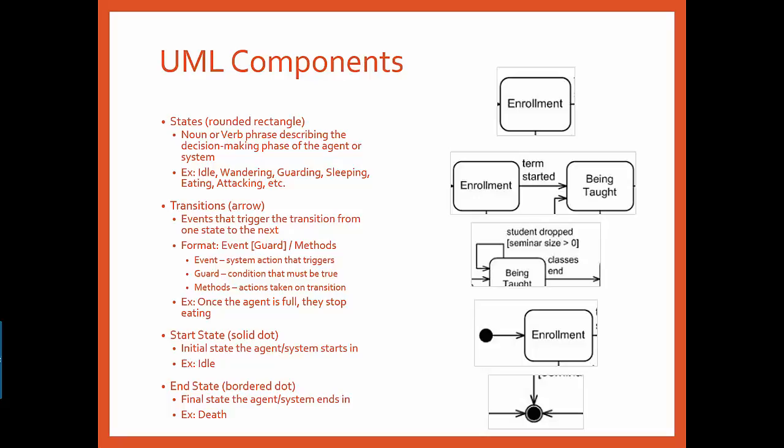Transitions describe how the agent moves from state to state and under what conditions that transition is possible. Simple transitions are arrows from the current state to the next state. Additional information can be added to the transition describing the event that triggers the transition, the condition that must be true to allow the transition, and any actions taken when transitioning. The event is added as plain text, the guard in square brackets, and the methods called following a slash. All three of these descriptors are optional but usually at least the event or guard are used to indicate why the transition occurs.